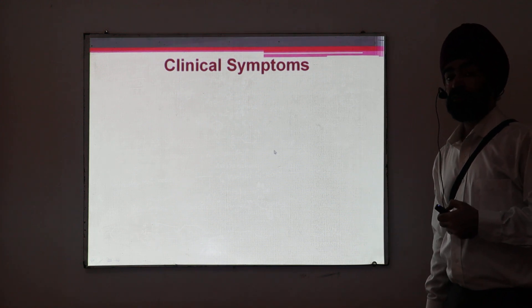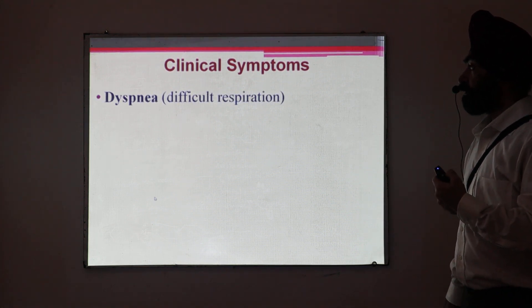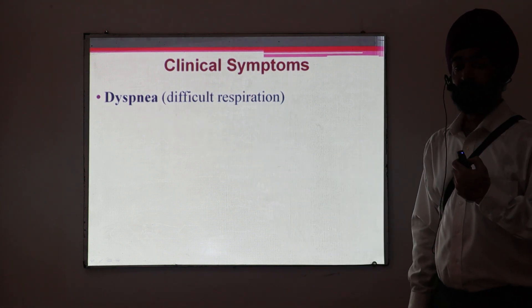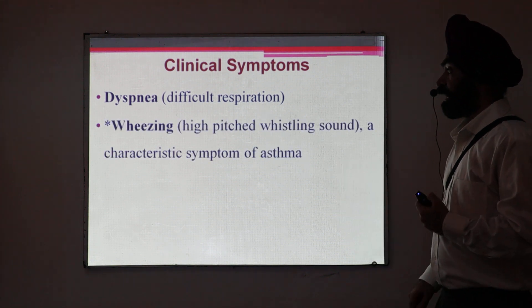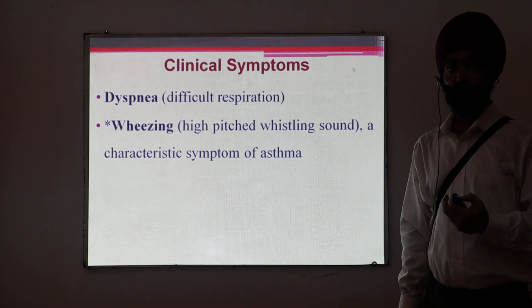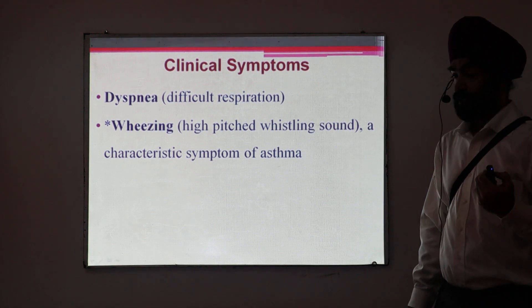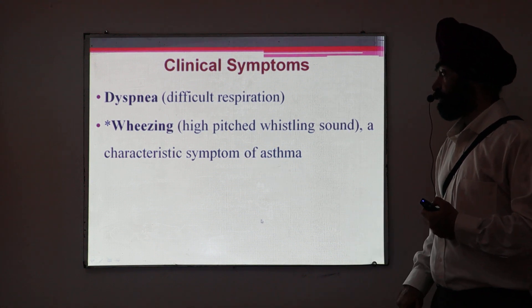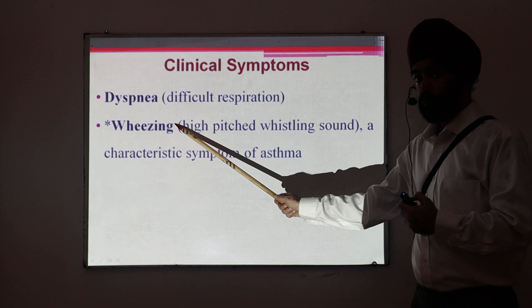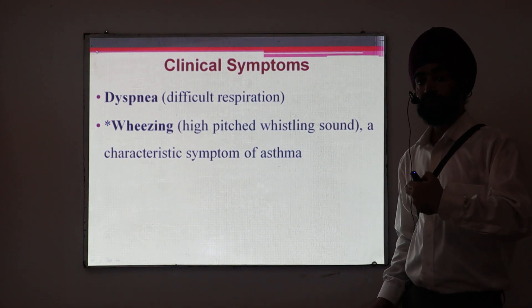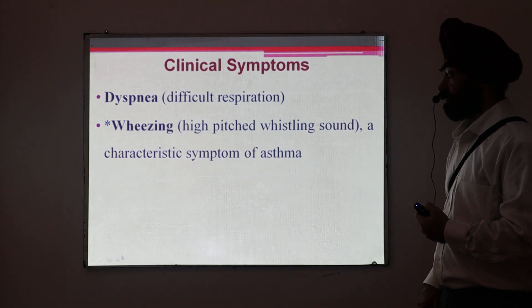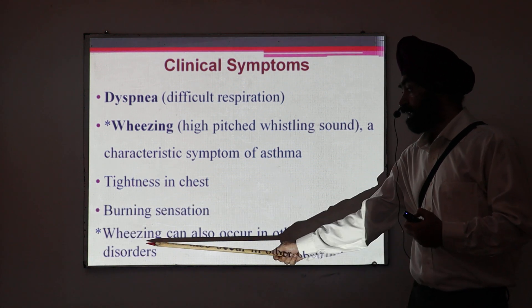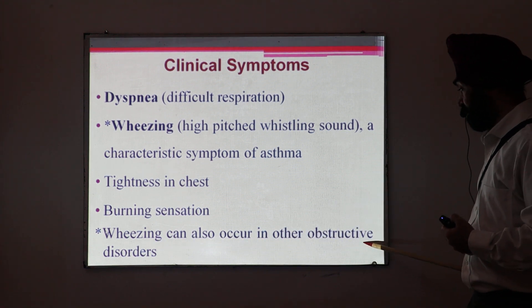Coming to what are the symptoms — the complaints of the patient. The most common complaint is dyspnea: the person is not able to respire in a normal manner, feeling difficulty in respiration. A very characteristic feature is wheezing: a special high-pitched whistling sound is produced when the patient takes inspiration or expiration. It is a characteristic symptom of asthma, but remember, wheezing is not exclusive to asthma — it can also occur in other obstructive diseases. The person also feels tightness in the chest and a burning sensation.